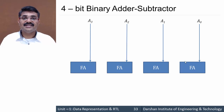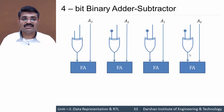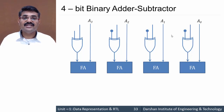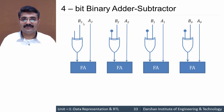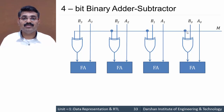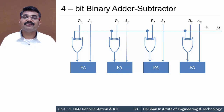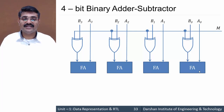The second input to each full adder is the output of an XOR gate. This XOR gate has two inputs: the first is B (B0, B1, B2, B3), and the second is a common M input shared by all XOR gates. M decides whether we are performing addition or subtraction. The third input to each full adder is carry, and the same M is also given as the initial carry input.